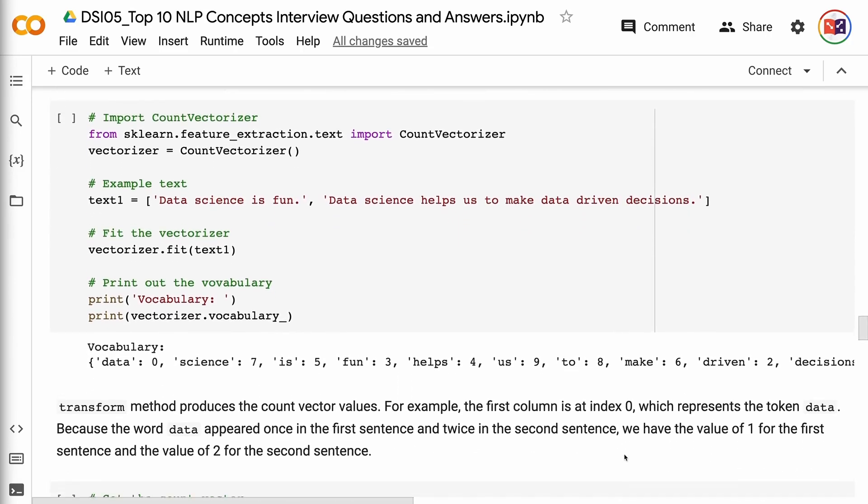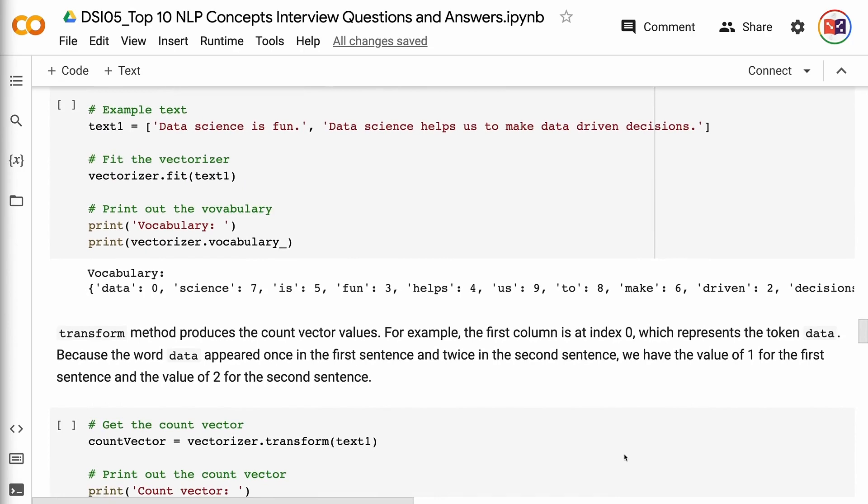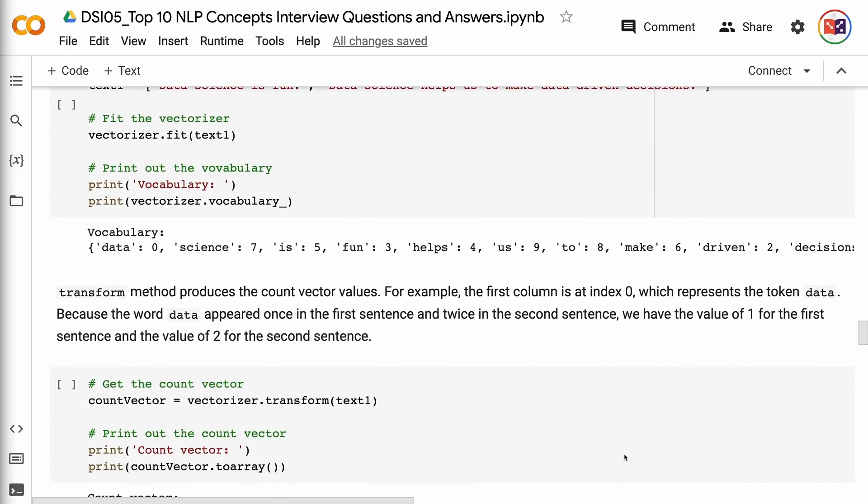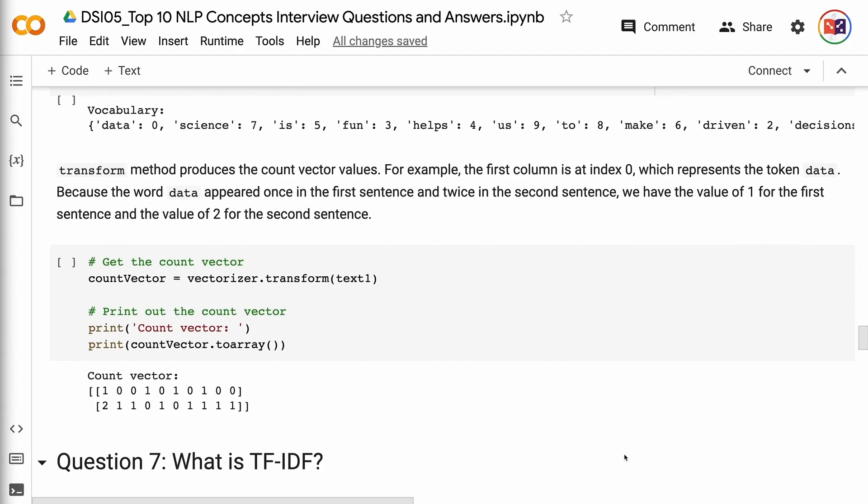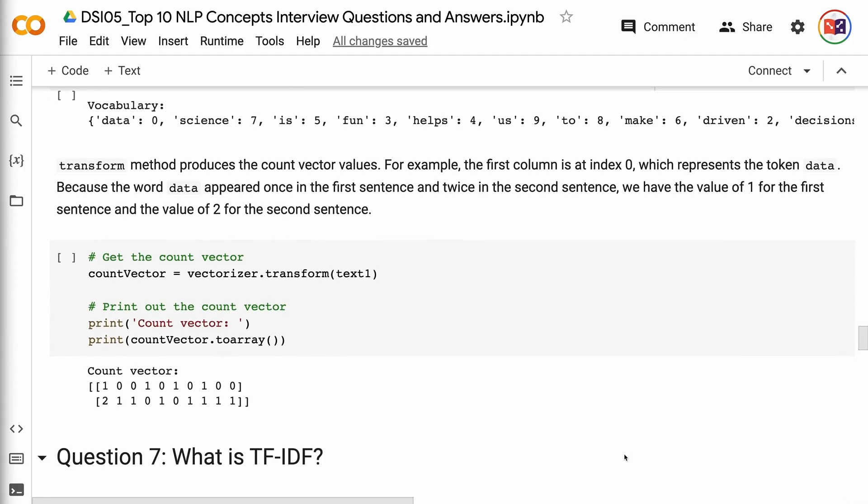Transform method produces the count vector values. For example, the first column is at index 0, which represents the token data. Because the word data appeared once in the first sentence and twice in the second sentence, we have the value of 1 for the first sentence and the value of 2 for the second sentence.